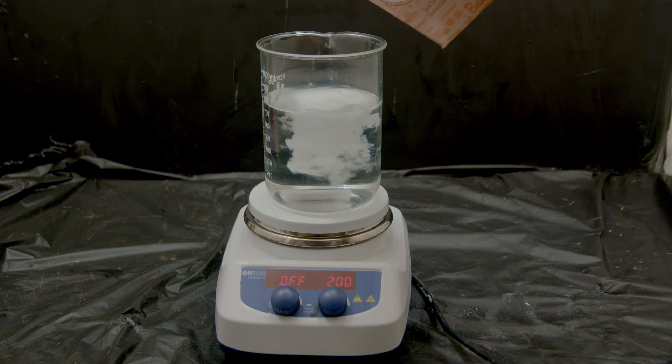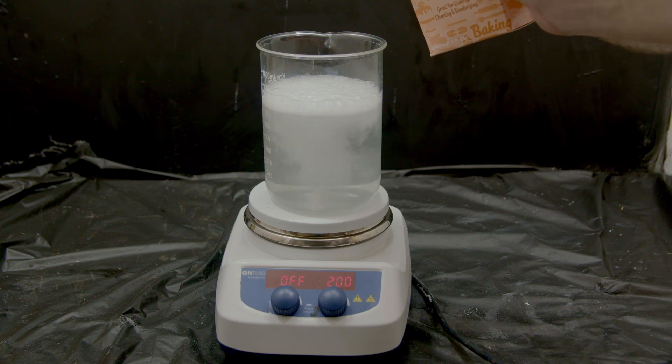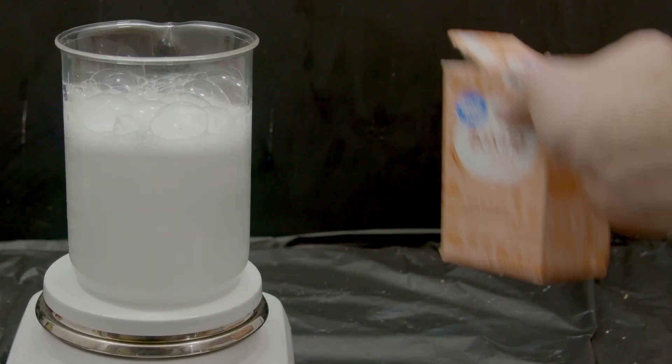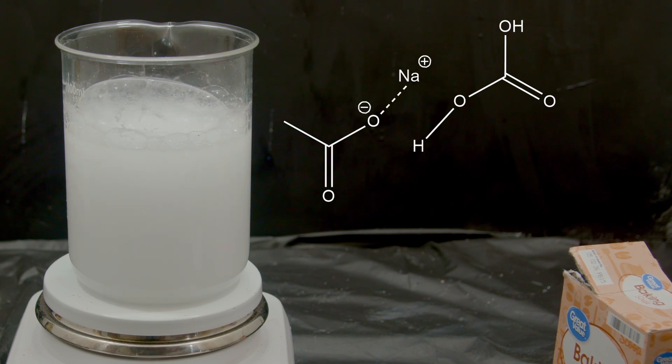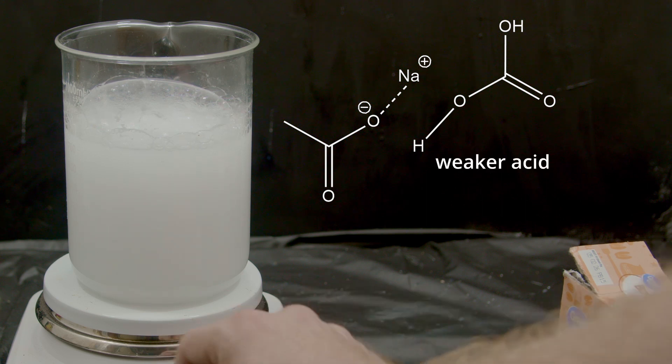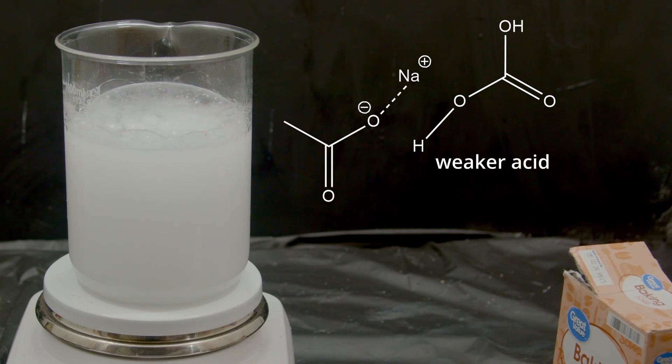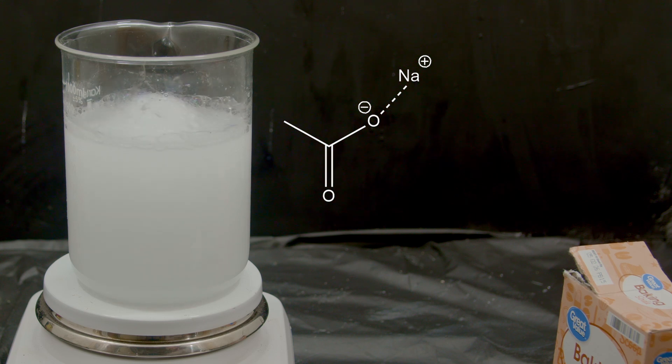So we start out by adding baking soda to vinegar. So what's happening here is when we add the baking soda to the acetic acid in the vinegar, it trades its hydrogen for sodium because by doing that it makes a weaker acid than we had before. So by taking on that sodium, the acetic acid has now become a salt called sodium acetate.